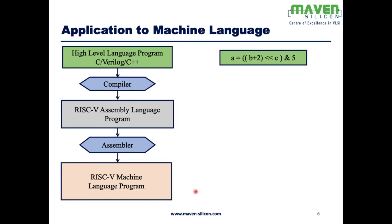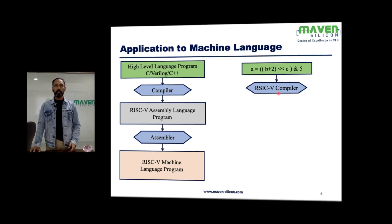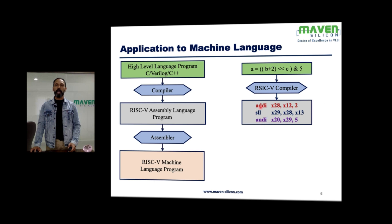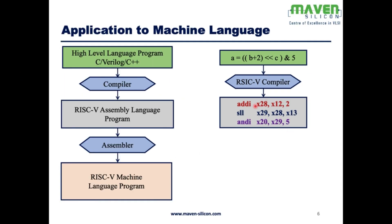Look at this example. This is how we define an expression in a high-level language — it could be SystemVerilog or C or C++. The compiler, the RISC-V compiler, converts this expression into assembly language. So these are all RISC-V instructions: ADDI, shift left logical, ANDI. This is how the assembly program would look, and then the assembler converts this assembly language into machine language.